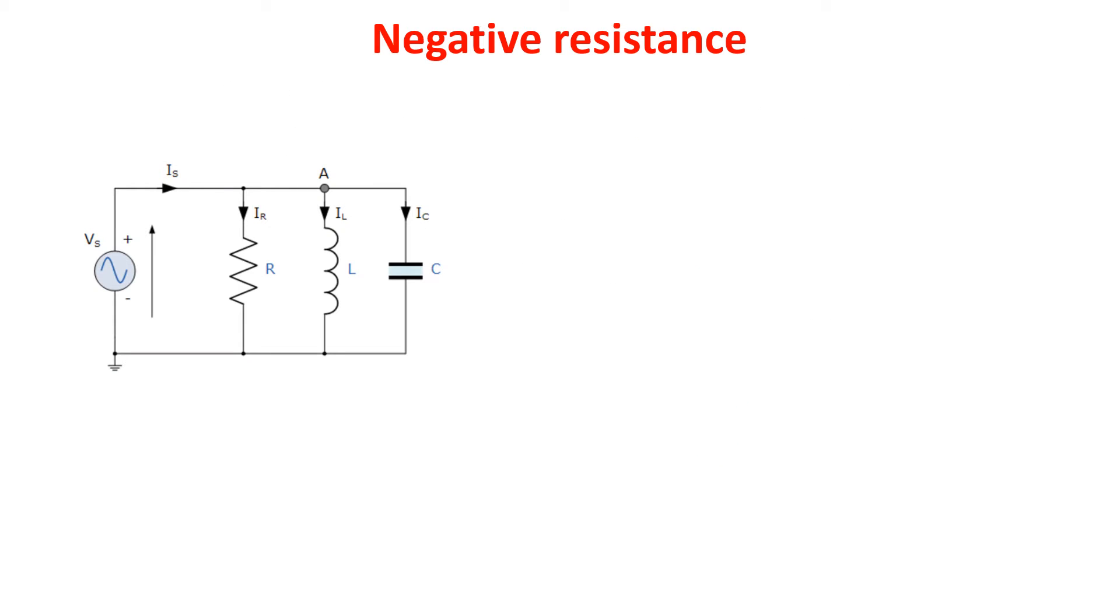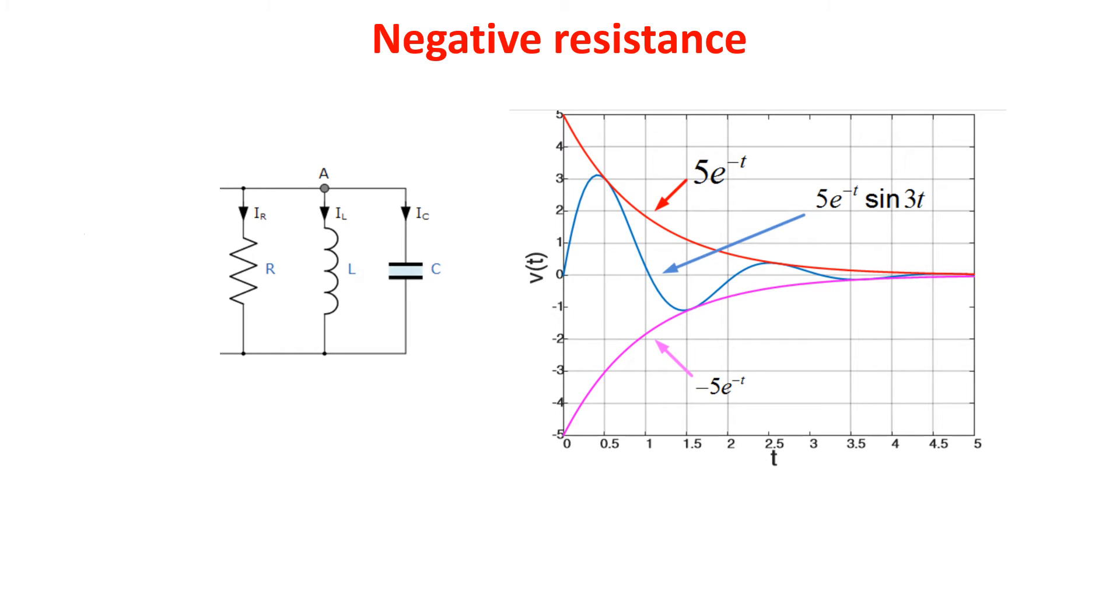Now let's see how to use negative resistance. For example, we know that an LRC circuit, initially charged by a voltage, starts to oscillate, but with an increasingly smaller amplitude due to the energy dissipation in the resistance R.